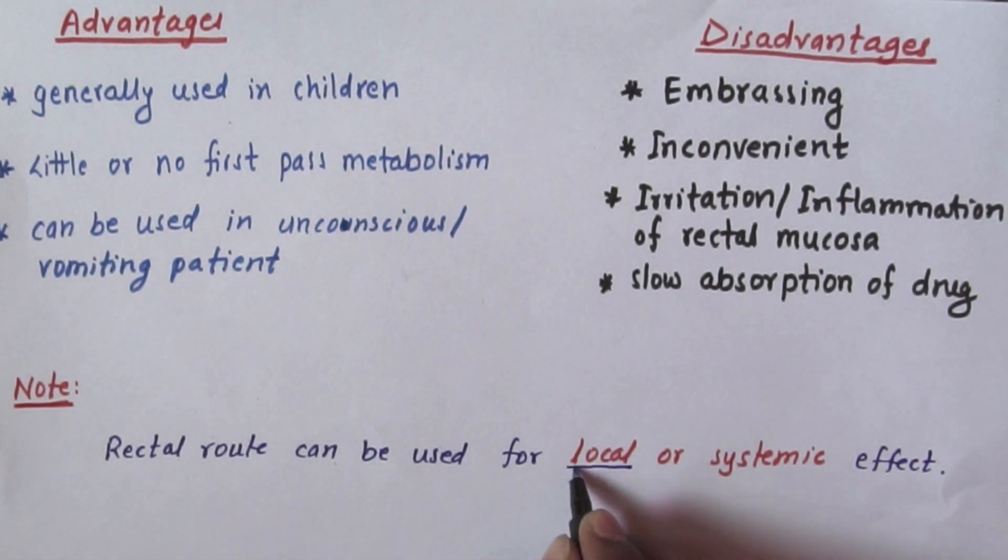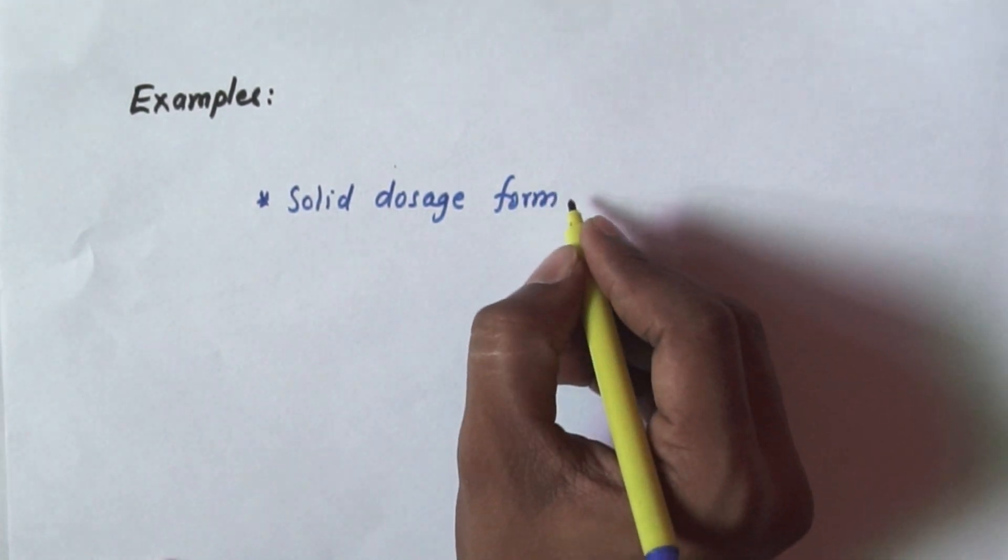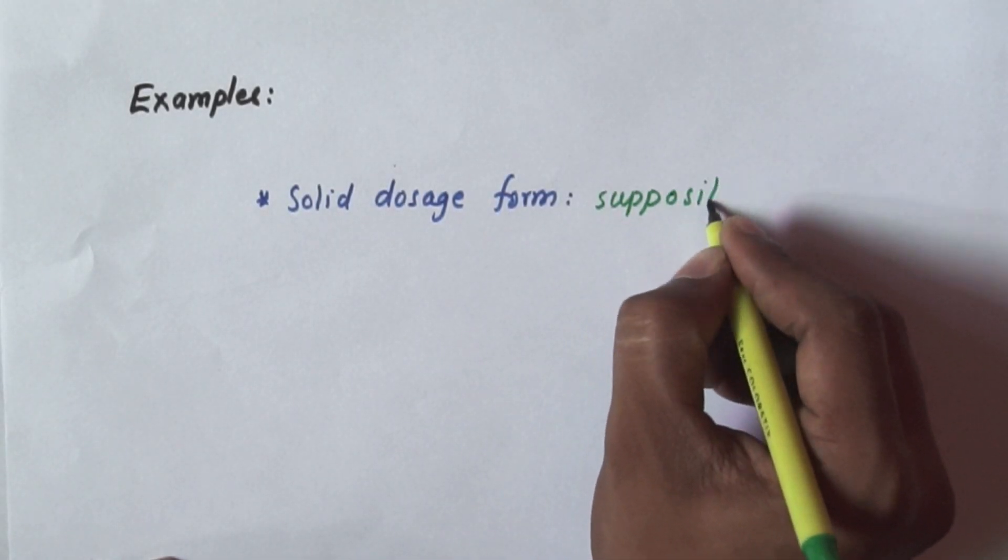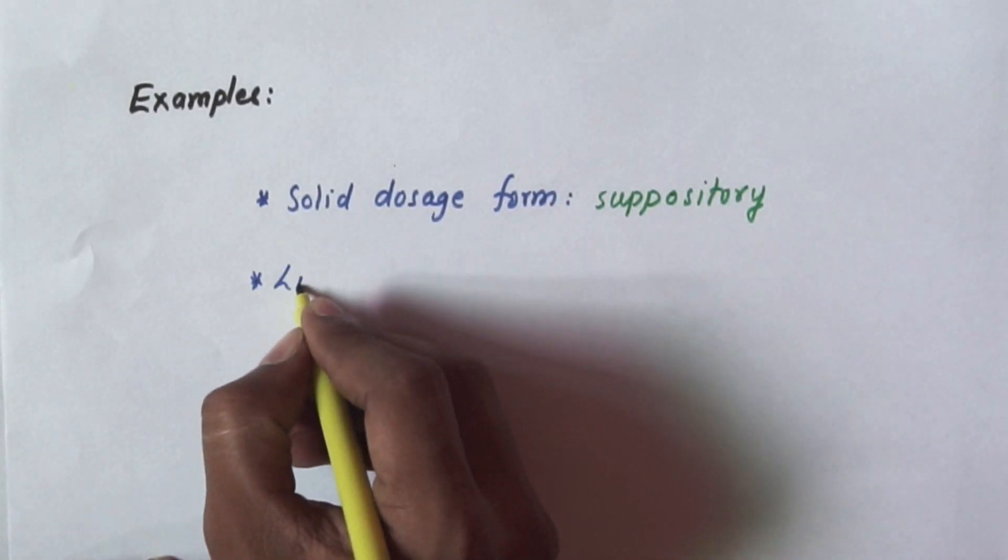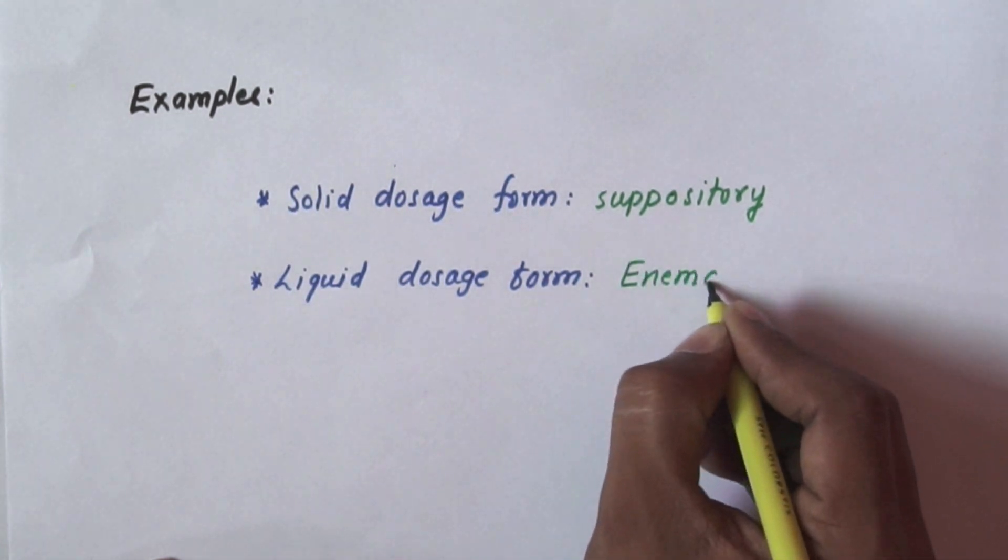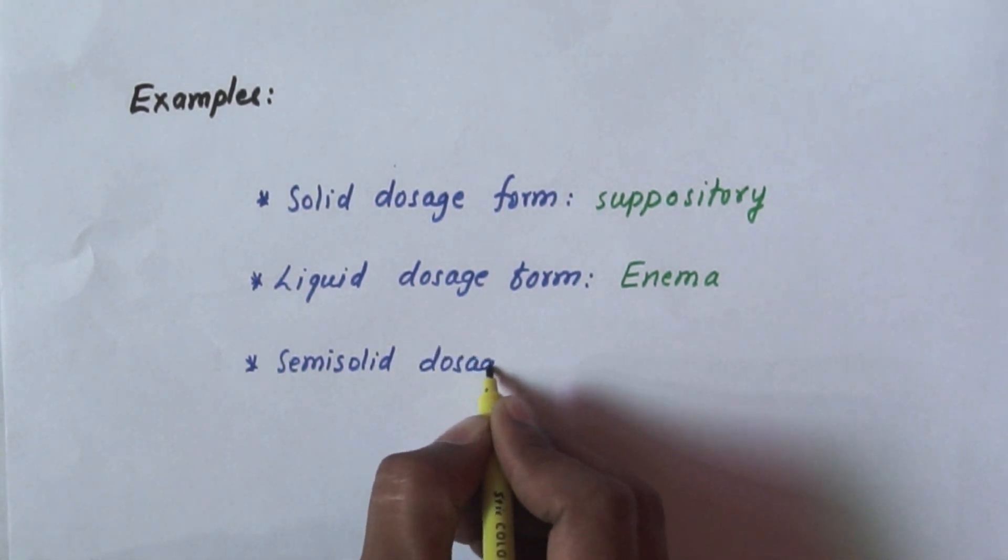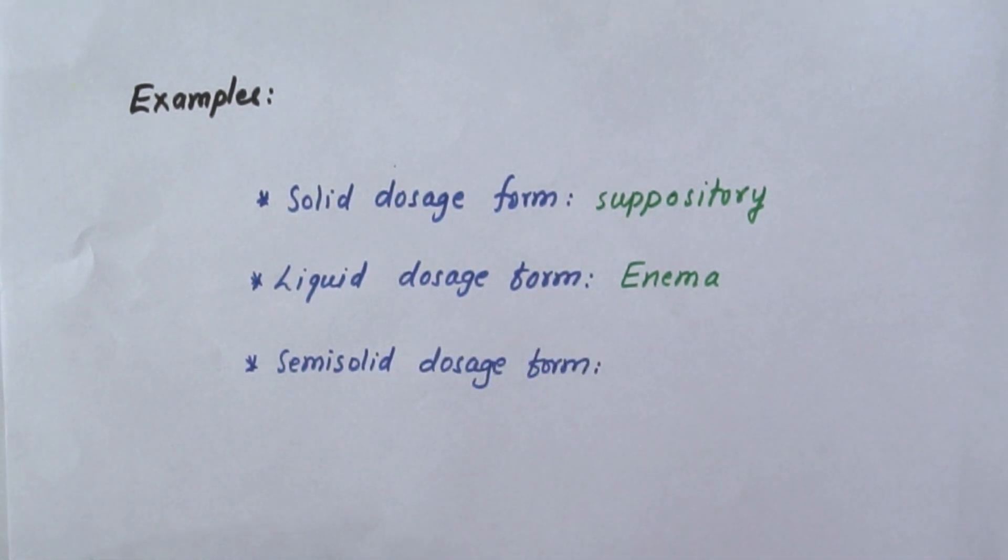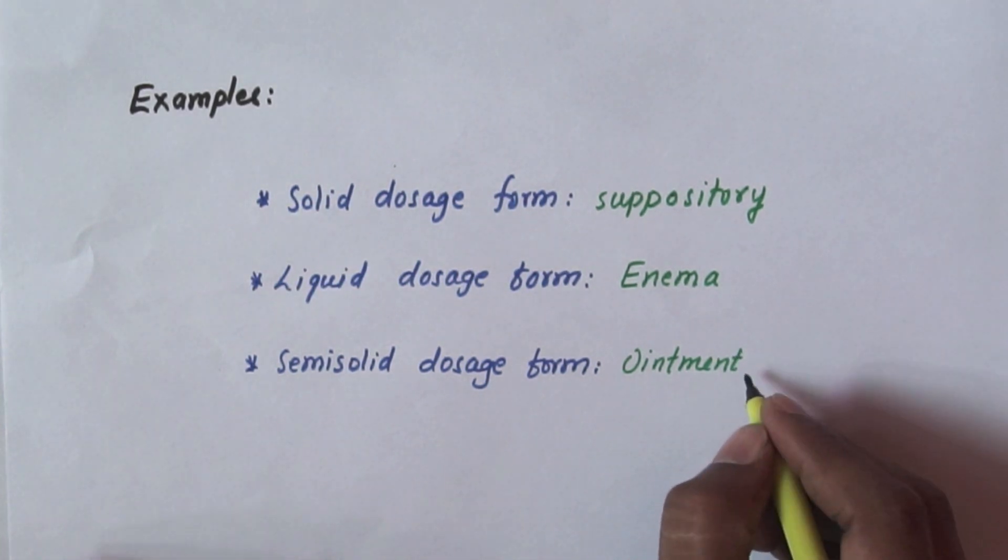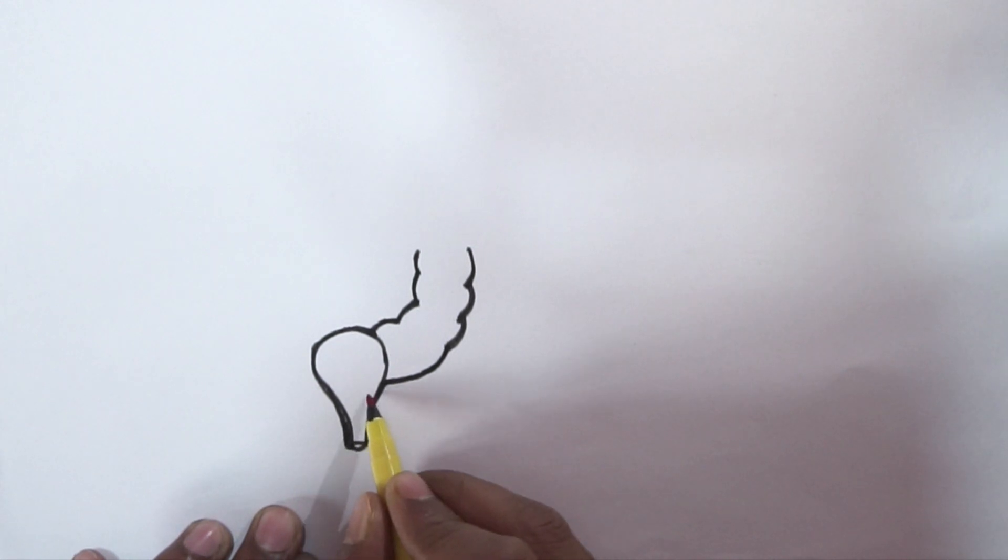Now we will mention a note that the rectal route can be used for local or systemic effect. It means it can be used for local purpose or systemic purpose. Now we will discuss about examples. So first example is like solid dosage forms. Under this, example is suppositories. Coming to liquid dosage form, the example is enema. So semi-solid dosage form, the examples are ointment, creams, etc.